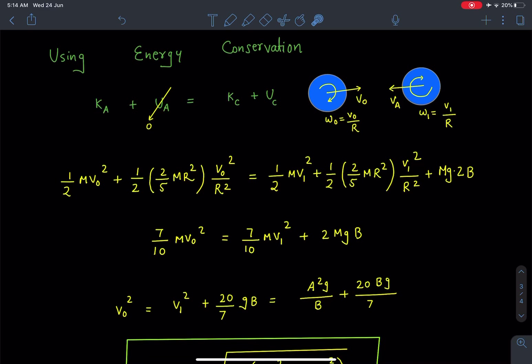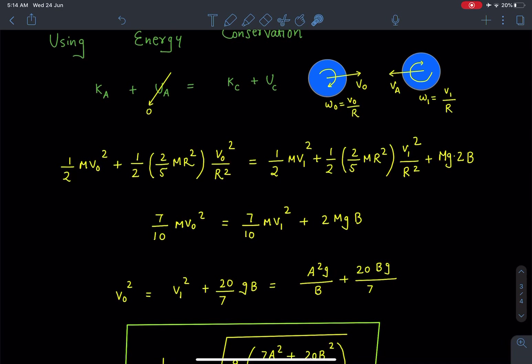Kinetic energy at the bottommost point I can take it as sum of translational kinetic energy plus rotational kinetic energy. So I can write it as, because both translational velocity as well as the rotational velocity, angular velocity, is present at bottommost point as well as at the topmost point.